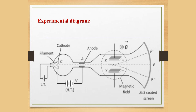This is the schematic diagram of a CRT or cathode ray tube. The main components are the cathode, a hot filament, the anode, and two metal plates between which a high potential difference can be applied. This is the positive plate and this is the negative plate. An electric field is applied between these two plates, and a magnetic field can be applied in a direction perpendicular to the electric field.